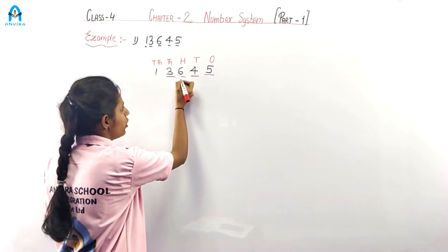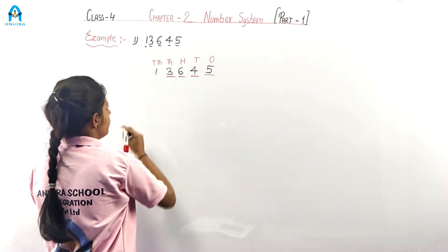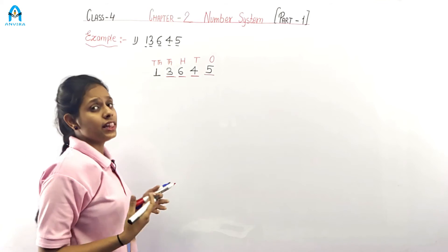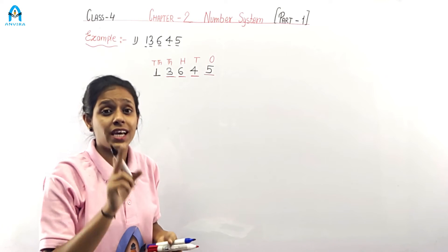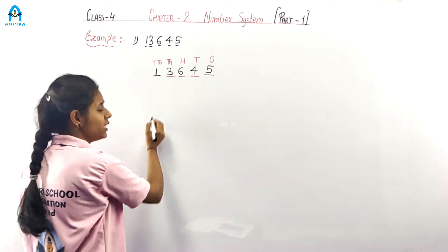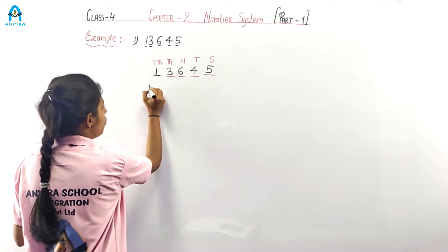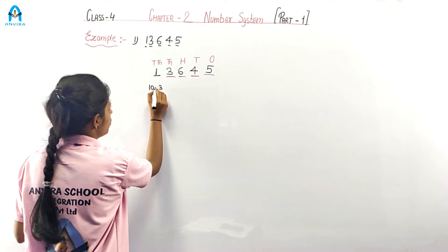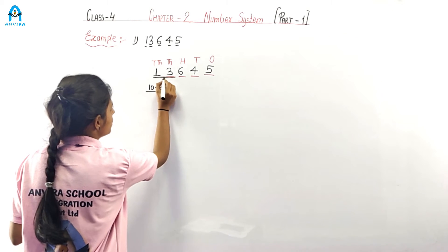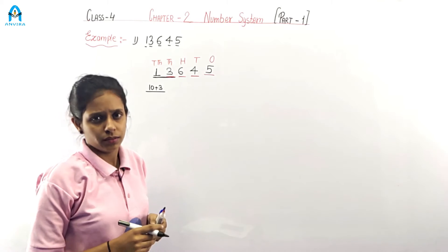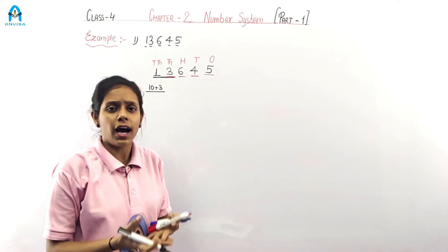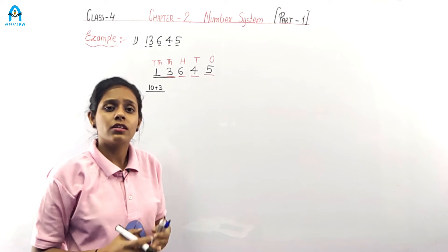So this is three thousand six hundred forty-five. Now we have one more digit in the ten thousands place. One ten thousand and three ones makes thirteen. So reading together: this is thirteen thousand six hundred forty-five.